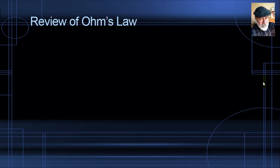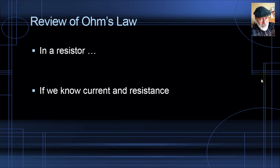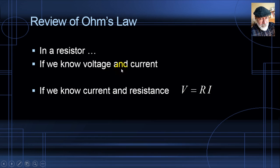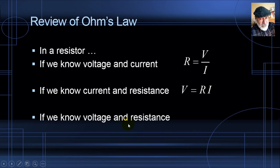We commence with a review of Ohm's Law. In a resistor, if we know the current and the resistance, we can compute the voltage: V = R·I. But if what we know is the voltage and the current, we can compute the resistance: R = V/I.